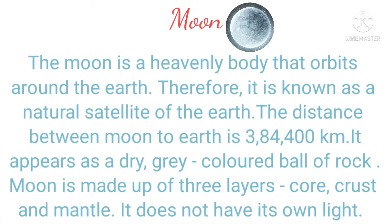The moon is a heavenly body that orbits around the earth, therefore it is known as the natural satellite of earth. The distance from the moon to the earth is 384,400 kilometers. It appears as a dry, gray-colored ball of rocks. The moon is made of three layers: core, crust, and mantle. It does not have its own light.